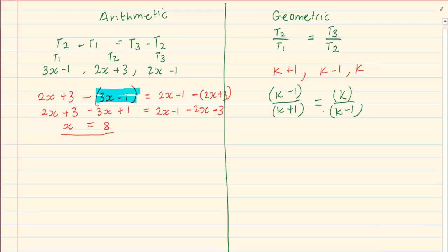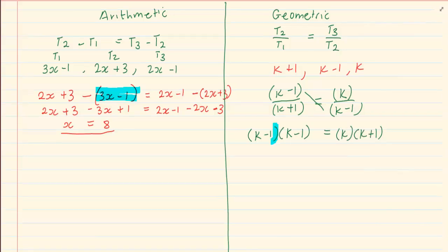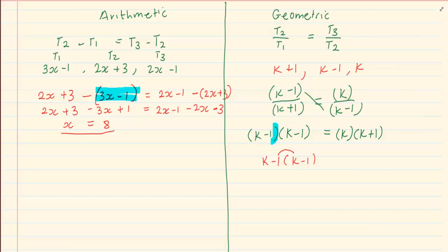How do we solve for k? You're going to say (k minus 1) times (k minus 1) — which is cross multiplication — is equal to k times (k plus 1). If you had not put the brackets in, you would have had k minus 1 into k minus 1 with no brackets, and pupils only do the distributive law incorrectly. Therefore, it is essential that pupils write the brackets in both terms.